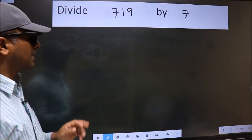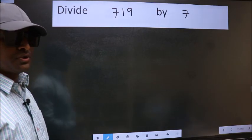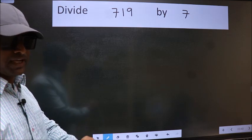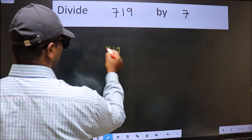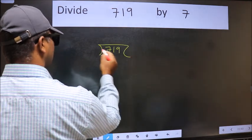Divide 719 by 7. To do this division, we should frame it in this way. 719 here and 7 here.